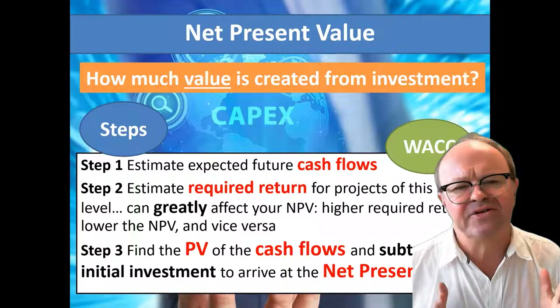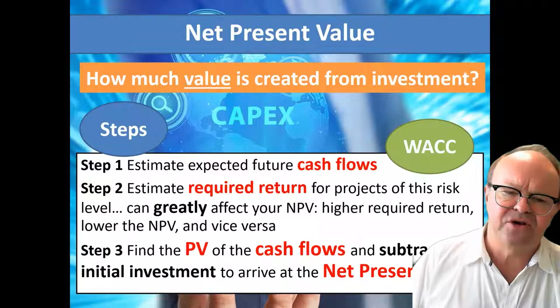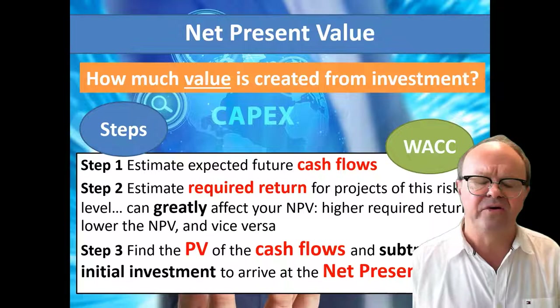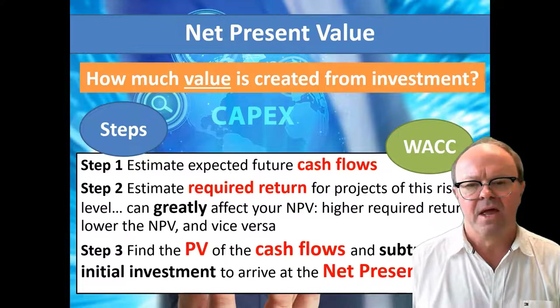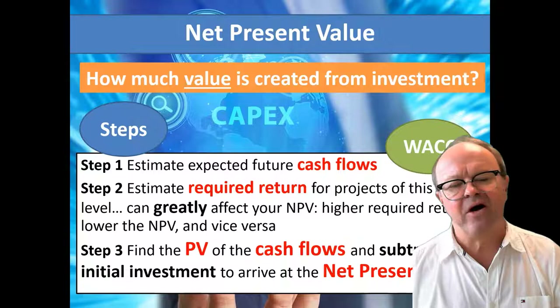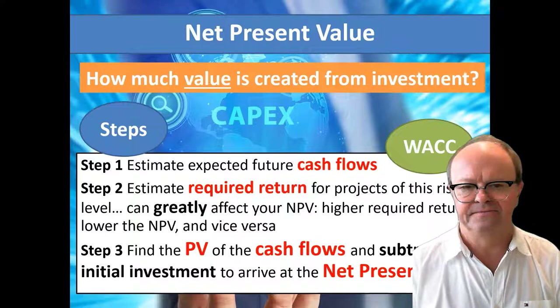NPV calculates how much value is created from an investment. Step one: estimate the expected future cash flows. Step two: estimate the required return for projects of this risk level. The discount rate can greatly affect your NPV — the higher the required return, the lower the NPV, and vice versa. Weighted average cost of capital can be used as a discount rate, but a lot of judgment is involved. Step three: find the present value of the cash flows and subtract the initial investment to arrive at the net present value.